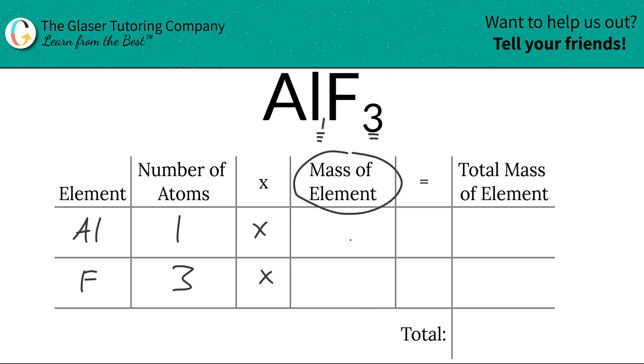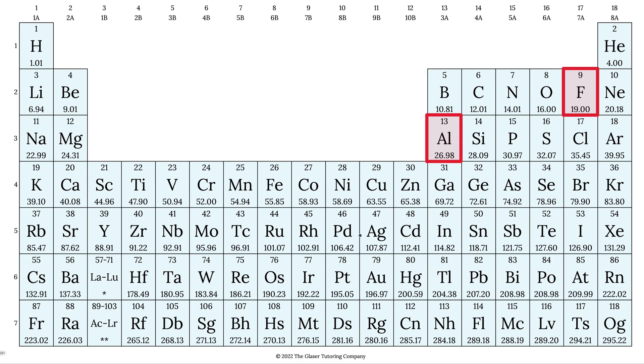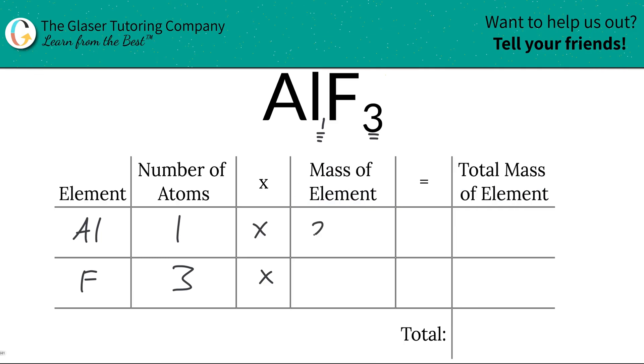We're going to take those numbers of atoms and then multiply it by the mass of each particular element. Now these masses are found on the periodic table, so let's take a look. Here's aluminum, here's fluorine, and the number down here will represent either gram per mole or amu depending upon if you're calculating molar mass or molecular mass. So let's write in these masses: 26.98 for aluminum and 19.00 for fluorine.